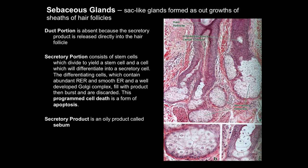Sebaceous glands are sac-like glands formed as outgrowths of the sheaths of the hair follicles. The secretory portion consists of stem cells which divide to yield another stem cell and a cell that differentiates into a secretory cell. The differentiating cells contain abundant rough and smooth ER and a fairly well-developed Golgi complex. The cell fills with the secretory product, and then the entire cell bursts and the contents are discarded — this is a form of programmed cell death. The secretory product is an oily substance called sebum, and as these cells rupture, the contents are released directly into the hair follicle.